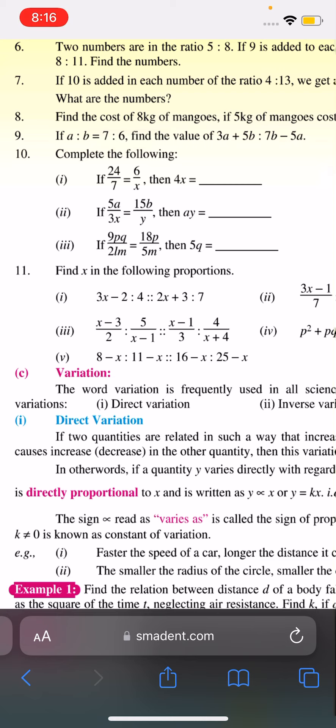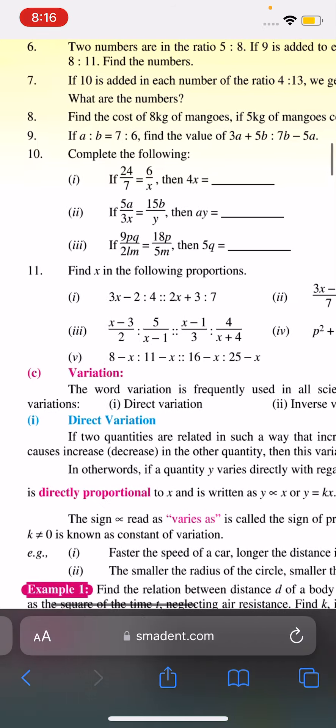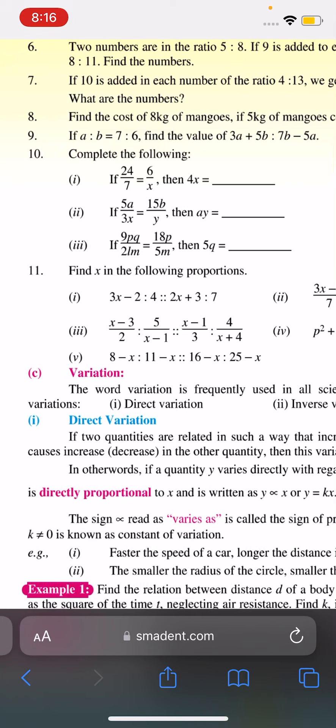So we will not see it. We will have variations. The word variation is frequently used in all sciences. There are two types of variation: direct variation and inverse variation.